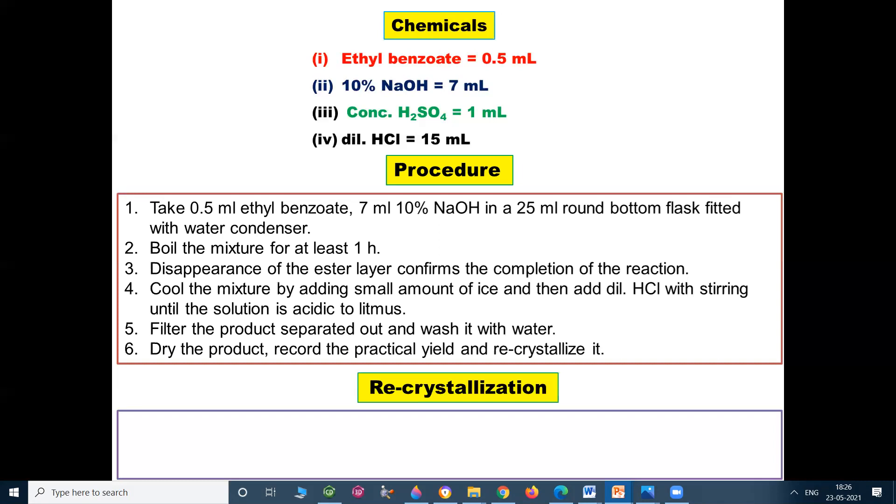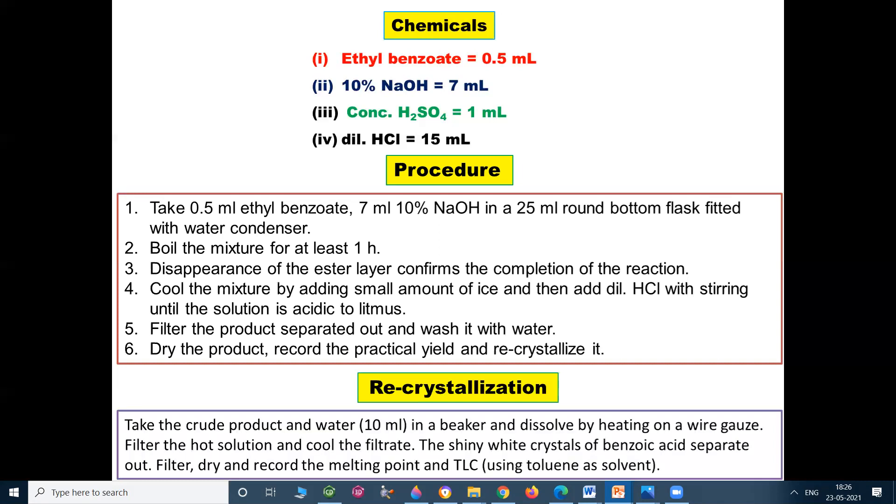Recrystallization: Take the crude product and water 10 ml in a beaker and dissolve by heating on wire gauze. Filter the hot solution and cool the filtrate. The shiny white crystals of benzoic acid separate out. Filter, dry and record the melting point and TLC using toluene as solvent.